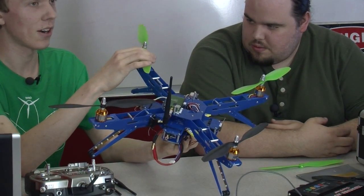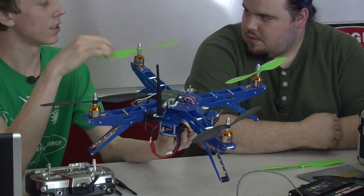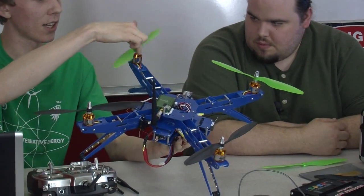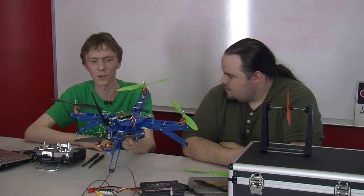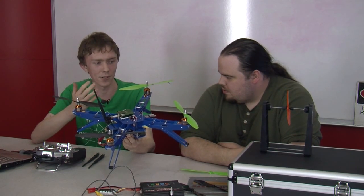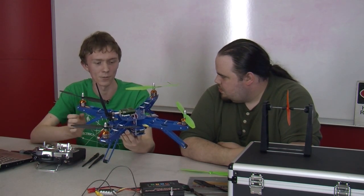Two of these propellers are clockwise. These are clockwise, and these are counterclockwise. The reason for that is if they're all clockwise, your copter's going to be spinning in circles. So it counter-reacts, and it cancels out the rotation.